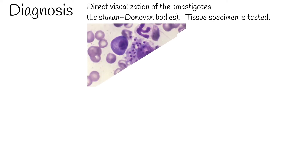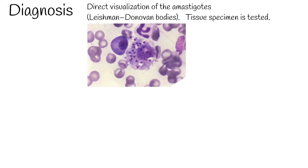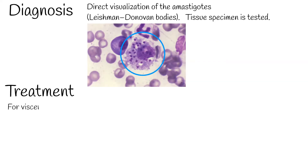Leishmaniasis is diagnosed based on symptoms plus laboratory testing, including direct visualization of the amastigotes, also known as Leishman-Donovan bodies. Tissue specimens are tested — for example, tissue from skin sores, bone marrow, or blood.